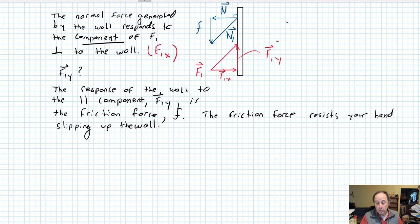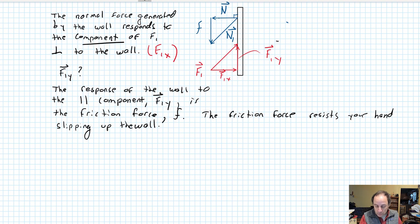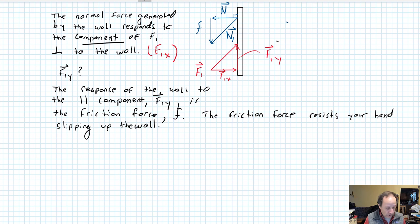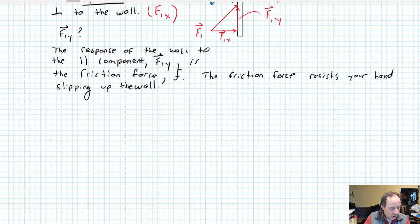So if the force is applied at an angle — which will normally be the case — you're going to have two components of the applied force: the one perpendicular to the wall generates the normal force and is responded to as a normal force by the wall; the other component, parallel to the wall, is responded to by friction.